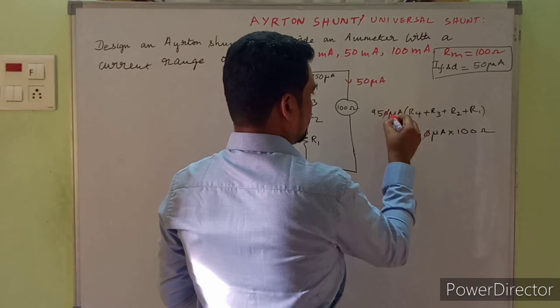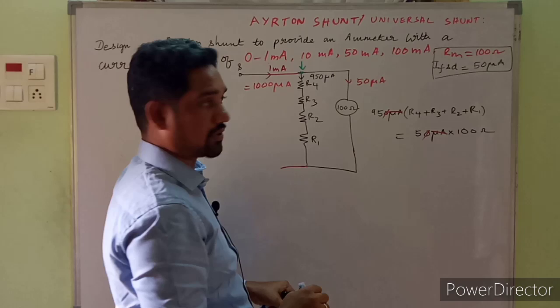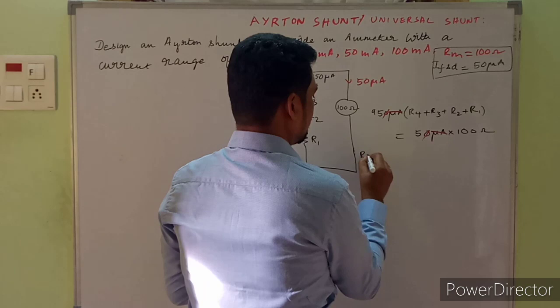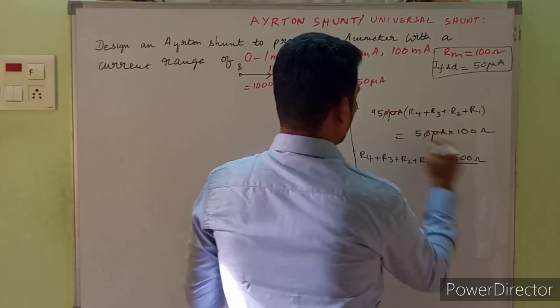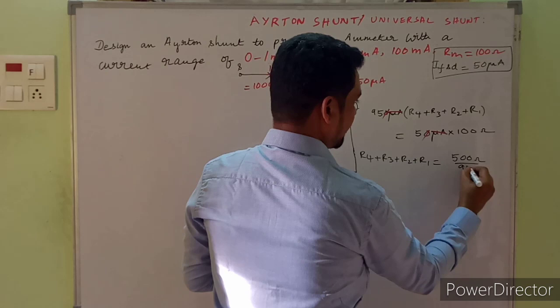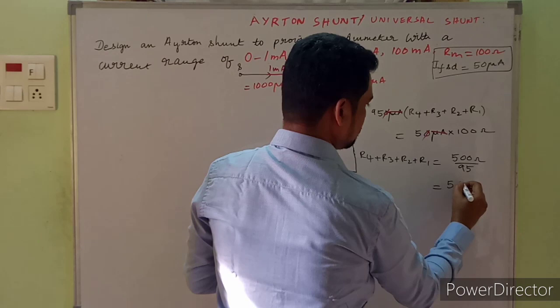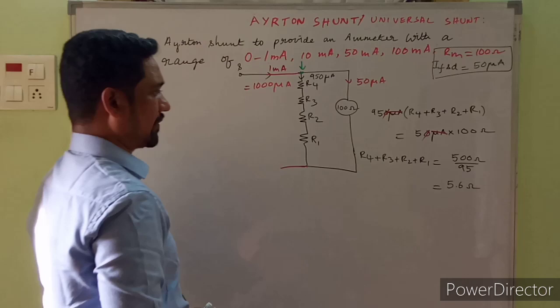Cancelling micro amperes on both sides, we are left with R4 + R3 + R2 + R1 = 5000 / 950, which equals approximately 5.26 ohms.